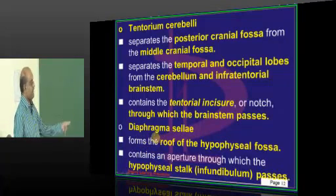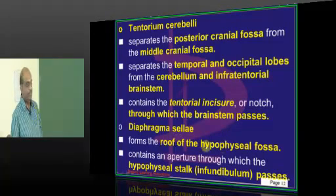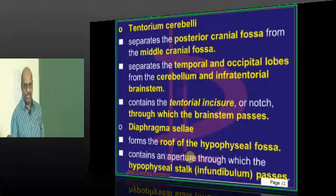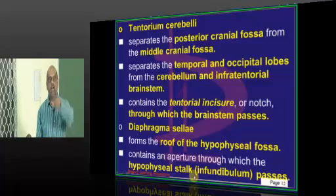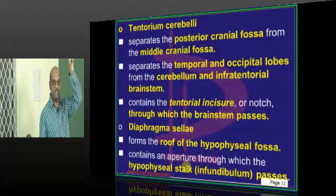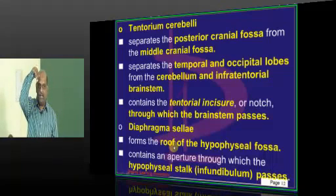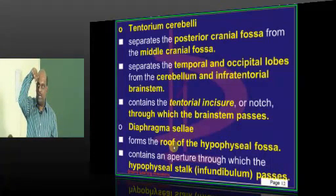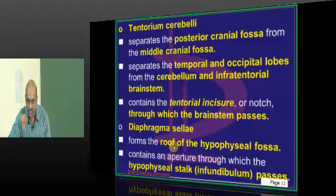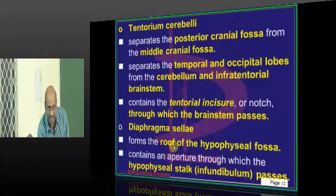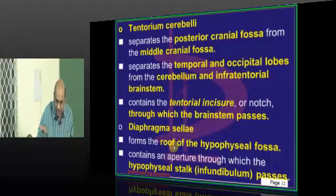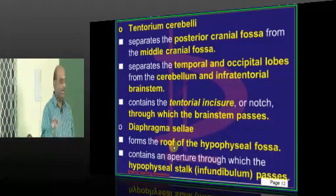We have one more important structure called the diaphragma sellae. It forms the roof of the hypophysial fossa — the pituitary gland — and it contains an aperture through which the infundibulum, the pituitary stalk, passes to ultimately connect with the hypothalamus. From the hypothalamus, vasopressin and other hormones pass through the blood vessels of this infundibular stalk and ultimately reach the posterior pituitary sitting in the pituitary fossa, otherwise called the hypophysial fossa. It is covered by the diaphragma sellae.